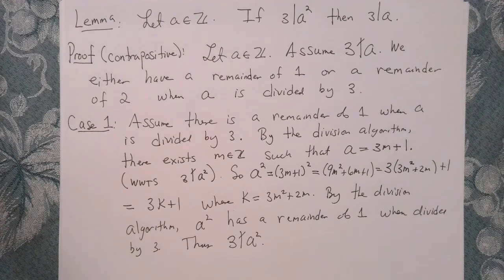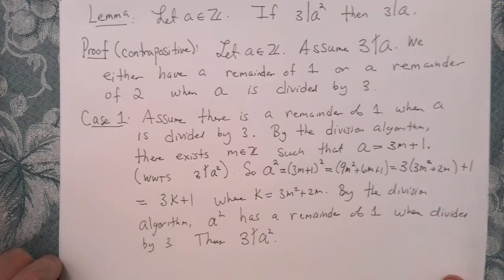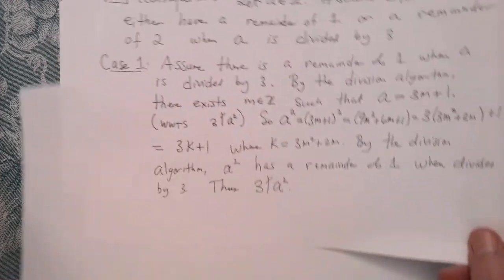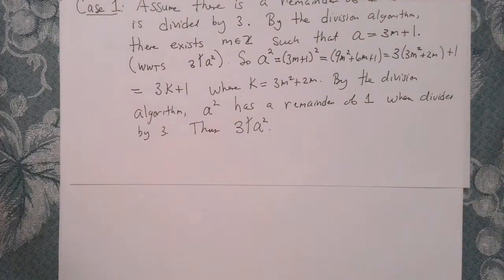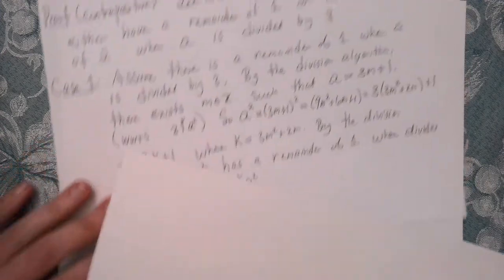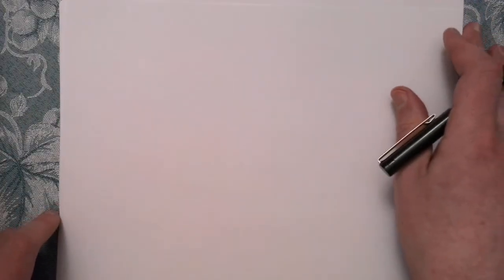Now in case 2, we're going to check what happens if there's a remainder of 2 when A is divided by 3. It's going to look very similar. Actually, you know what? I want the room. Let's move that off. Here we go. So case 2.